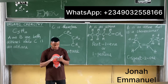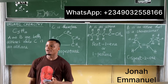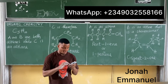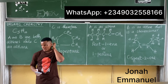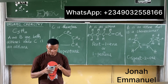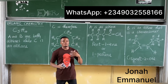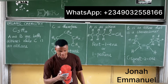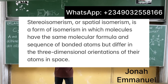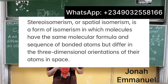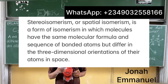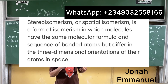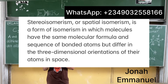The last part asks: state the meaning of stereoisomerism. Here is the definition — stereoisomerism, or spatial isomerism, is a form of isomerism in which molecules have the same molecular formula and sequence of bonded atoms, but differ in the three-dimensional orientations of the atoms in space.